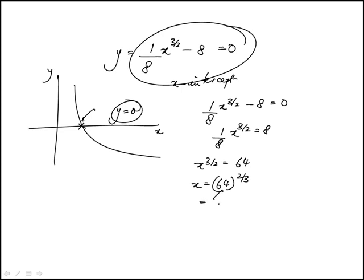Now, 64 is 4 cubed. So I can write this as (4^3)^(2/3). When we multiply the exponents, 3 times 2/3, this gives 4^2, which is 16.